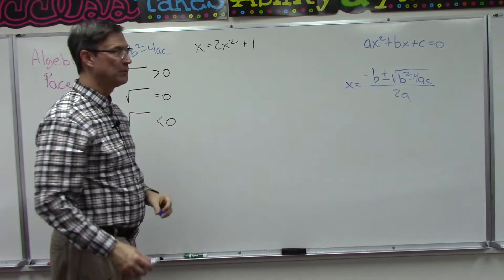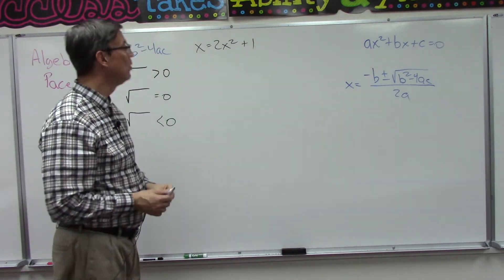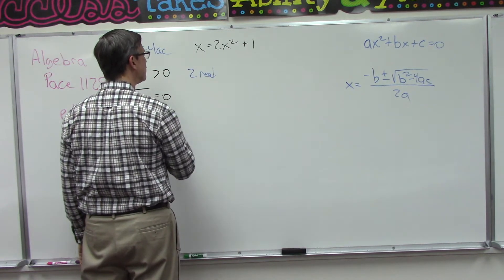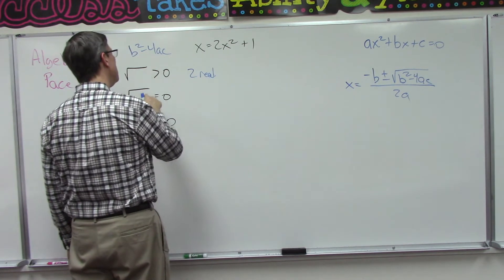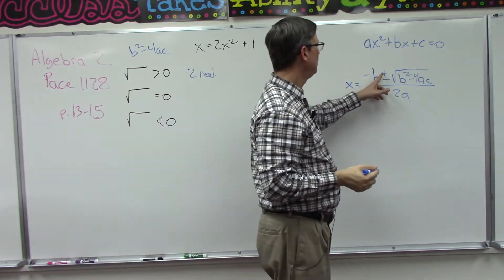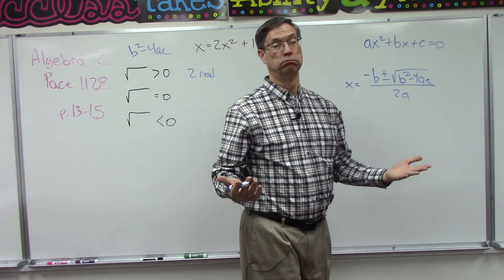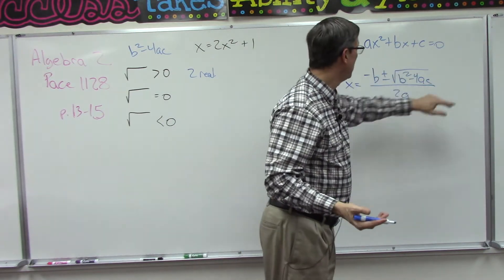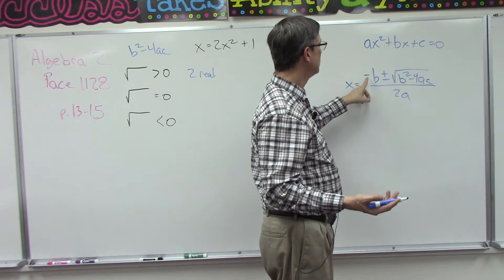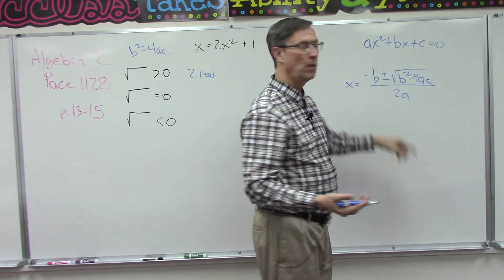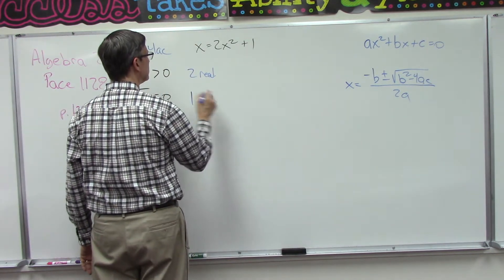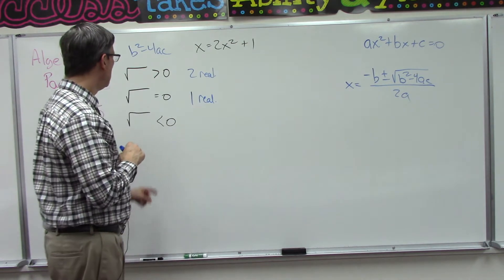If that ends up being greater than zero—not the square root part, this part, the b squared minus 4ac—if that's greater than zero, then that means we have two real number solutions. If this whole thing becomes zero, then basically we're saying negative b plus or minus zero, which means that whole thing goes away. So we don't have a plus or minus anything because it's just zero. We have one answer: negative b over 2a. So we would have one real number solution.